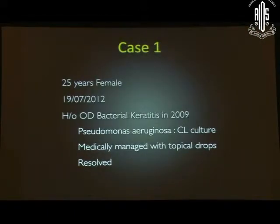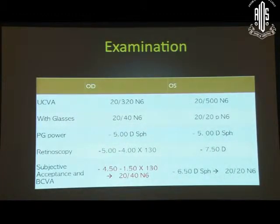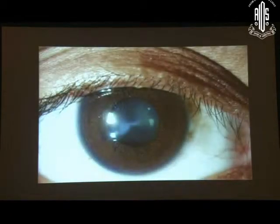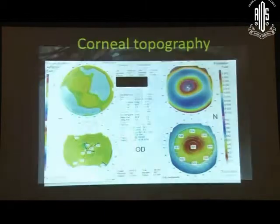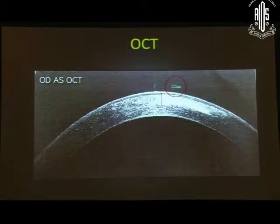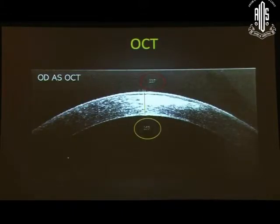I'd like to share two cases of FALK we recently did. The first was a 25-year-old female with a history of contact lens-associated keratitis who, though completely healed with medical management, had a best corrected visual acuity of only 20/40 and an anterior stromal scar. She wanted LASIK surgery, but LASIK was not a good idea because the flap would carry the scar. Topography showed astigmatism of around 1.4 diopters. Our OCTs found the scar was approximately 240 microns deep, with a residual stromal bed of around 250 microns.